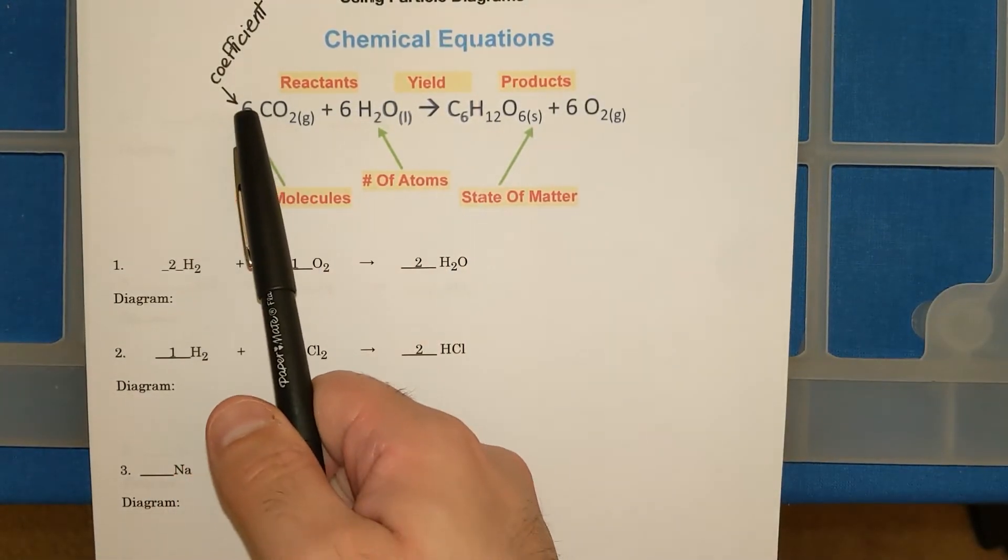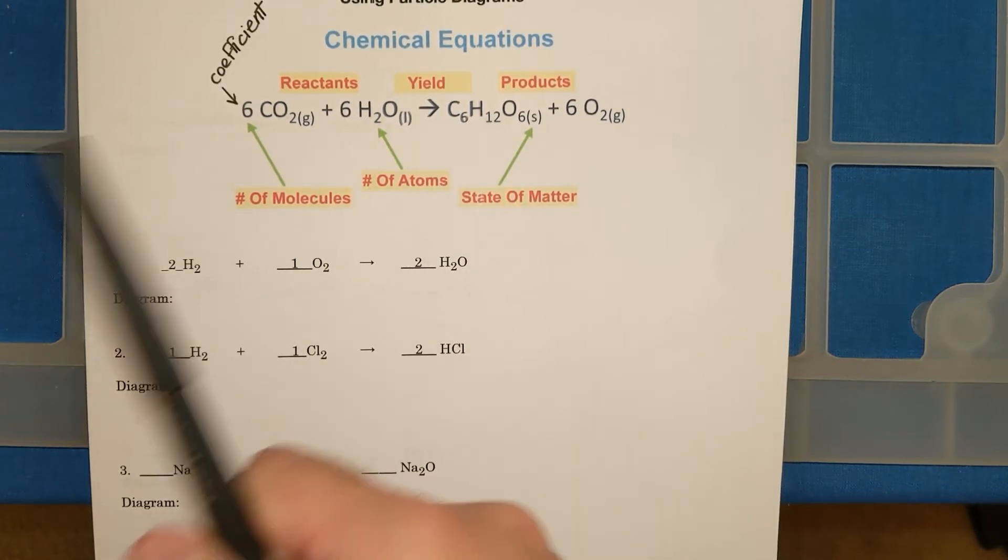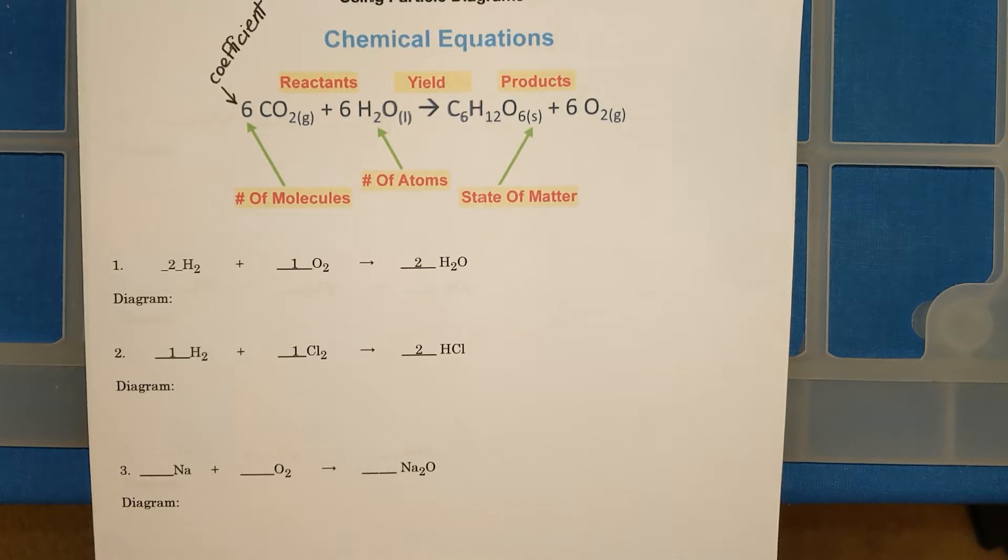So these numbers in the front, the 6, the 6, the 6, this one has an invisible one, those numbers help you balance a chemical equation to have a conservation of mass.